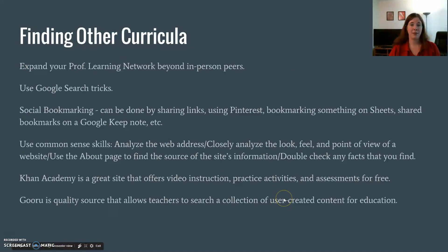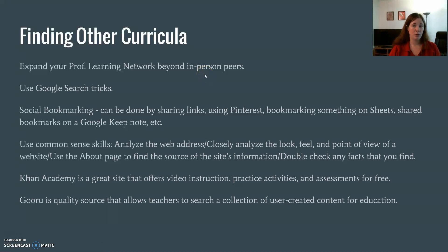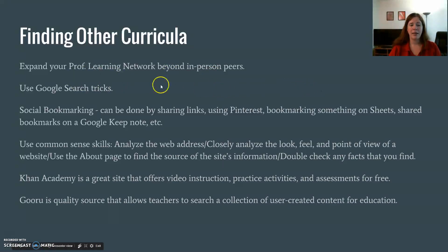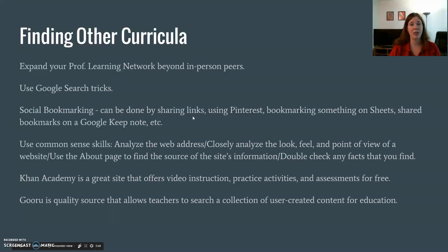Then they talk about finding other curriculum, which is essentially: use the internet to find other curriculum. You want to expand your professional learning network beyond in-person peers. You can do this through Google communities or through Twitter — there are a whole bunch of ways to connect. You can use Google search tricks, which I covered in the first part of this series, and it seems we'll revisit those in Unit 8. You can use social bookmarking by sharing links through a Sheet, a shared Google Keep note, or Pinterest — anytime you do social bookmarking, you're bookmarking it not just for yourself but also for the community.